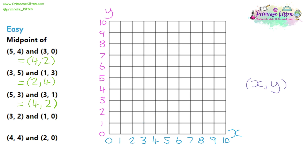Moving on to question 4, we have (3, 2) first — 3 across and 2 up — and then (1, 0). Be careful with the 0s: 1 across and then 0 up. Students can get confused with 0s — they mean the point is going to lie on the axis. Join them up, find the coordinate in the centre, and write down the numbers it corresponds to. On the x-axis we see a 2, and on the y-axis we see a 1 directly to the left of it. So the answer is (2, 1).